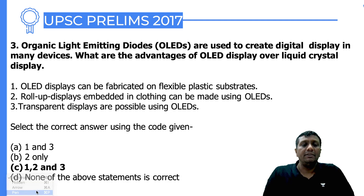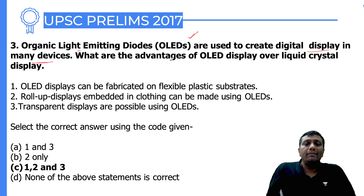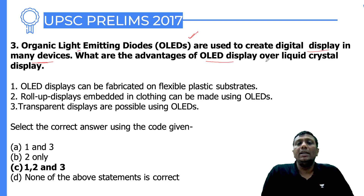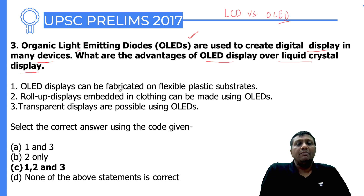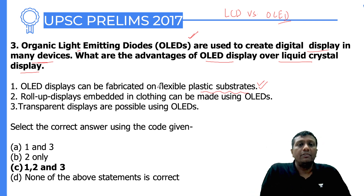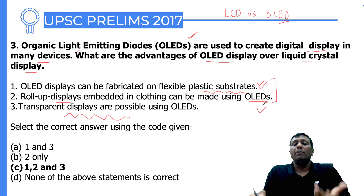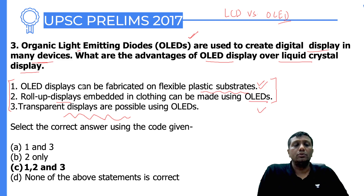The third question is about OLED — organic light-emitting diode — displays used in many digital devices including mobile phones and televisions. UPSC asked about the advantages of OLED over LCD. OLED displays can be fabricated on flexible plastic substrates, which is why we can roll them out like a carpet. Roll-up displays embedded in clothing can be made using OLED. Transparent and curved displays are also possible with OLED technology. All statements regarding OLED advantages are correct.